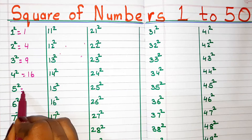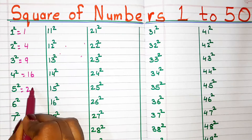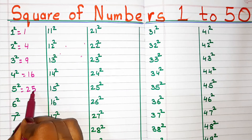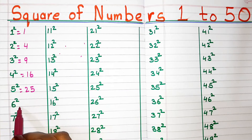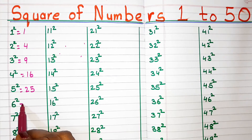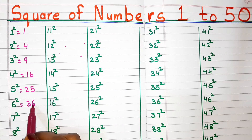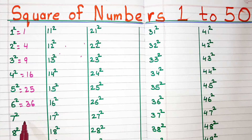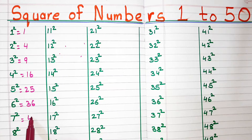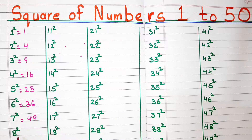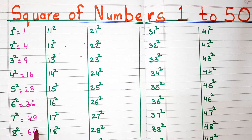Square of 5, 25. Square of 6, 36. Square of 7, 49. Square of 8, 64.